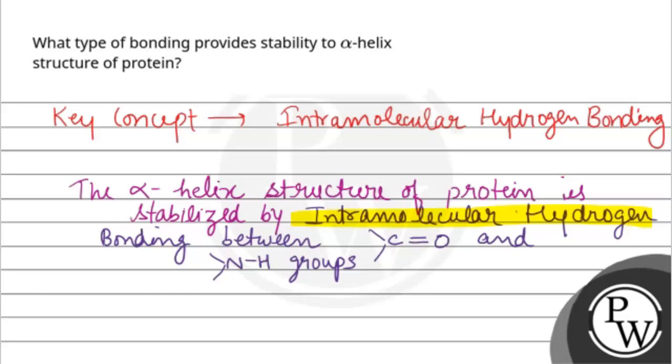Intramolecular hydrogen bonding between the C=O and N-H groups. This is the final answer. Hope you understand it well. Best of luck.